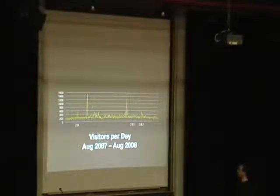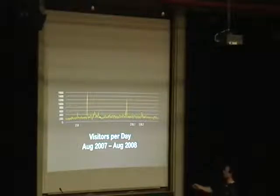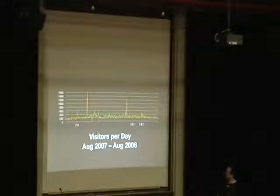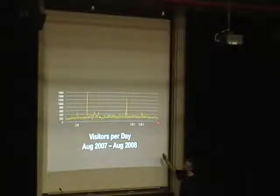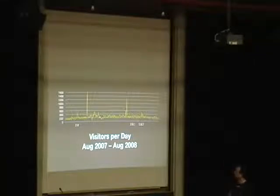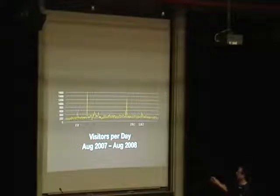Looking at the visitors-per-day graph, on average it's about 250. You can see when we did releases — I forgot to update that we did a 2A3 release at the end of the graph. So that's August last year at ESUG, and this is August this year around the time of ESUG.